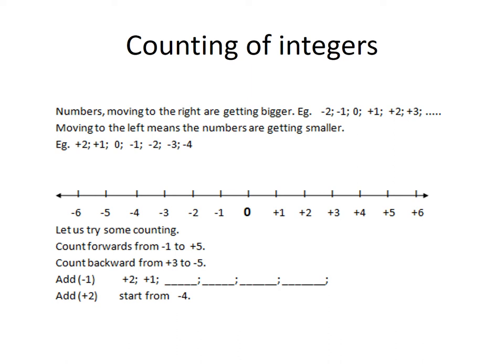So now let's try some counting. Let's count forwards from negative 1 to positive 5 — you can do this with me. Let's start: negative 1, 0, positive 1, positive 2, positive 3, positive 4, positive 5. Good.